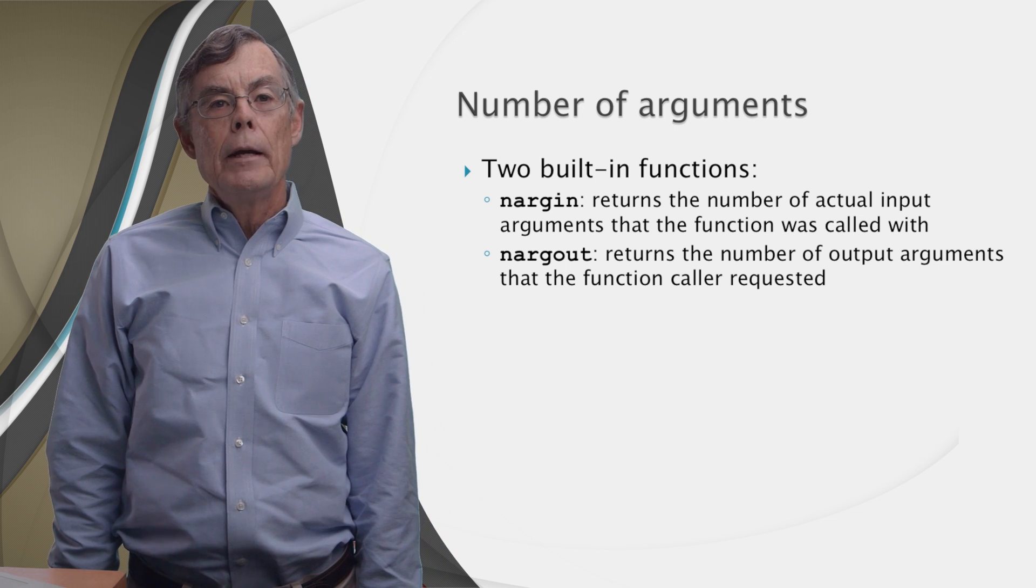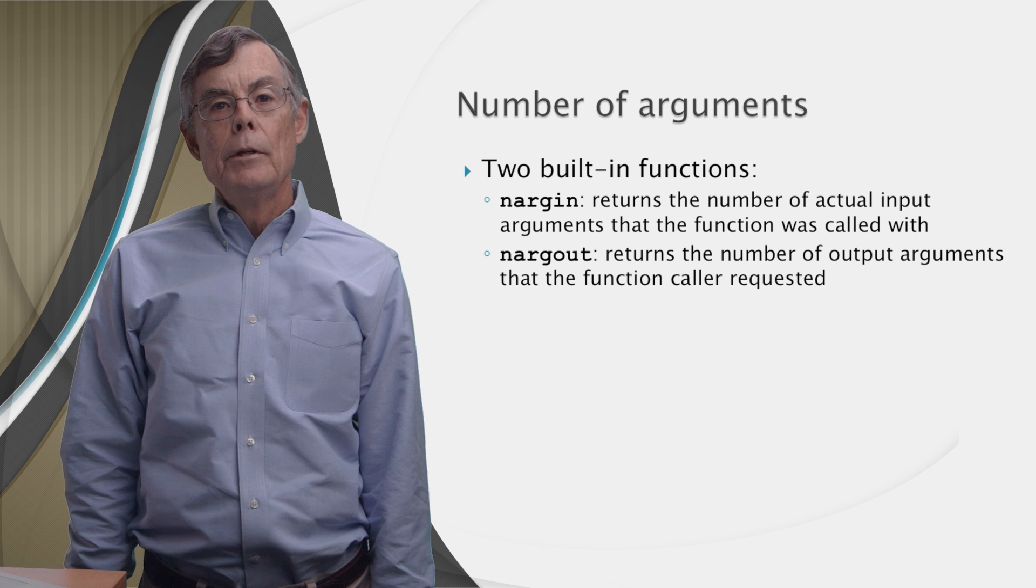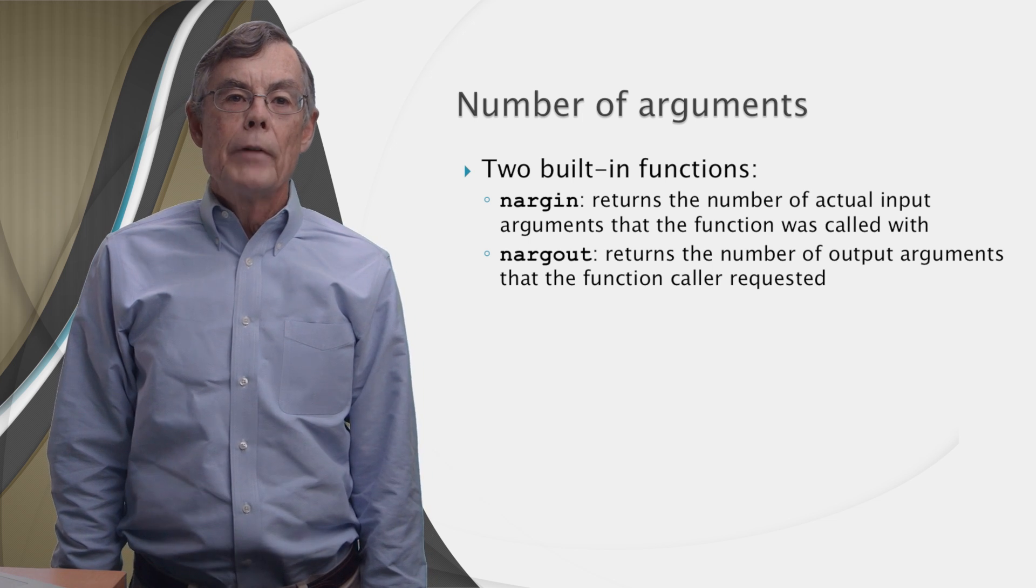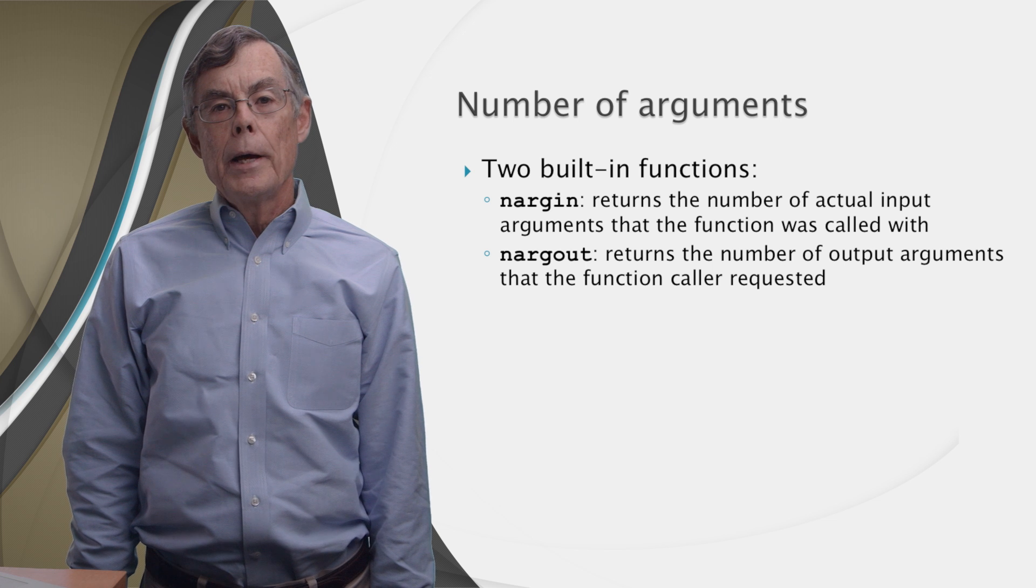First one's nargin, or n-argin, which means number of arguments input. It gives a number of actual input arguments that the caller passed in.